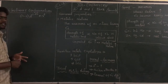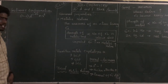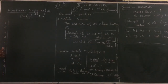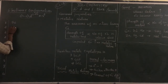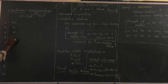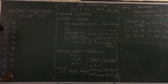We are going to see the electronic configuration. The first element is scandium, second is titanium, third is vanadium, then chromium, manganese, iron, cobalt, nickel, copper, and zinc.